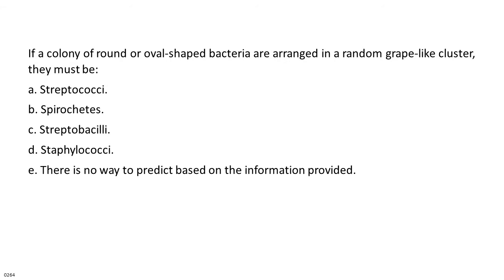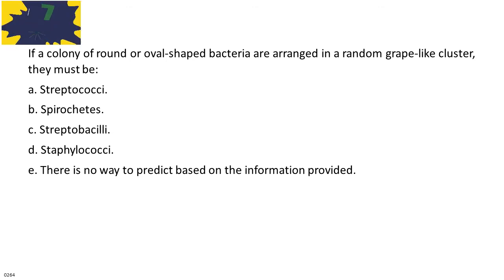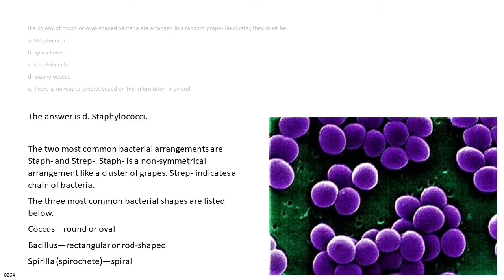If a colony of round or oval-shaped bacteria are arranged in a random grape-like cluster, they must be: A. Streptococci. B. Spirochetes. C. Streptobacilli. D. Staphylococci. E. There is no way to predict based on the information provided. The answer is D. Staphylococci. Staph is a non-symmetrical arrangement like a cluster of grapes. Strep indicates a chain of bacteria. The three most common bacterial shapes are: coccus (round or oval), bacillus (rectangular or rod-shaped), and spirilla (spirochete spiral).